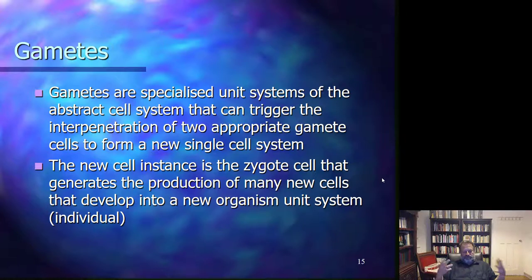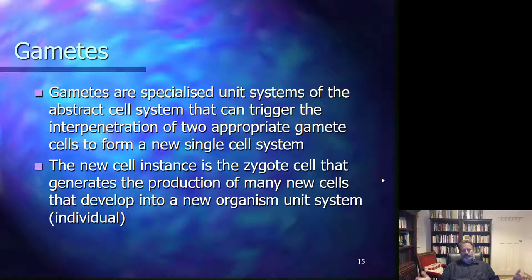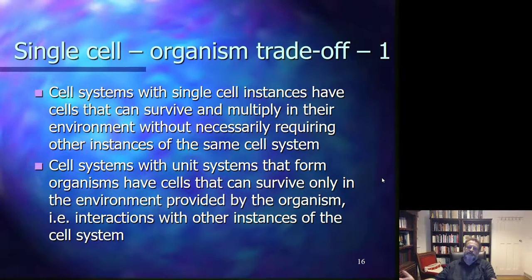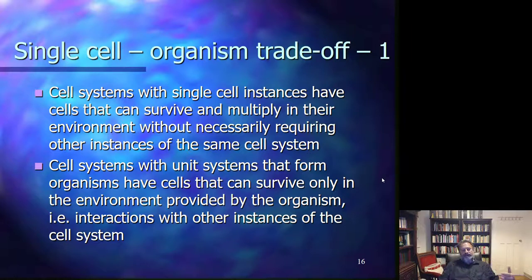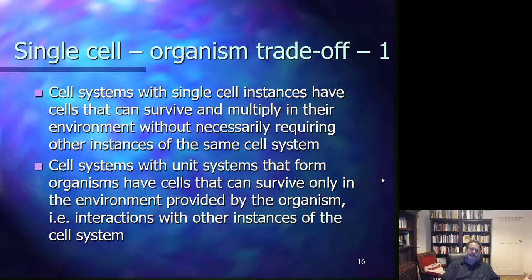Many of the cells generated through division originating from the zygote end up dying through apoptosis or other means, as directed by the organism, in order to generate the right kind of interactions between the cells forming the organism. A very large number of cells are generated; however, ultimately only some part of these cells will continually form the organism. As the organism exists, at all times cells get discarded and new cells are generated, while the organism as a whole is maintained.